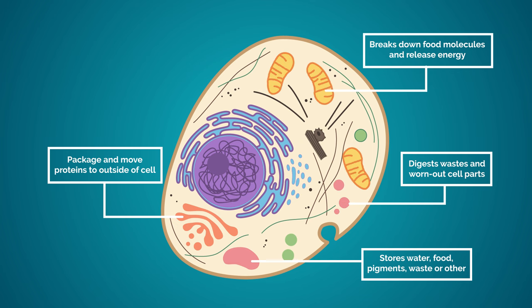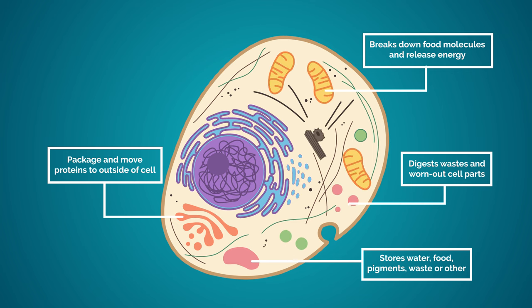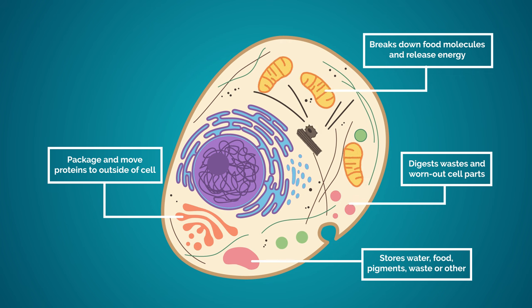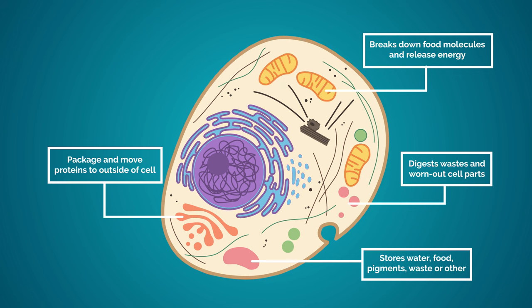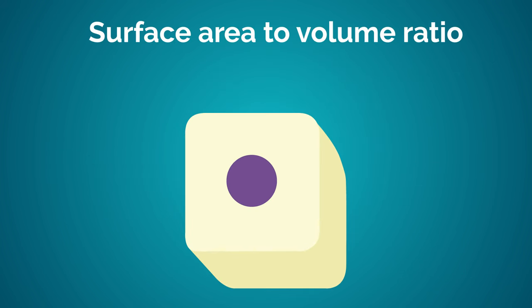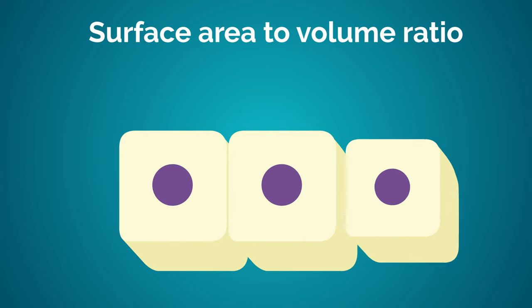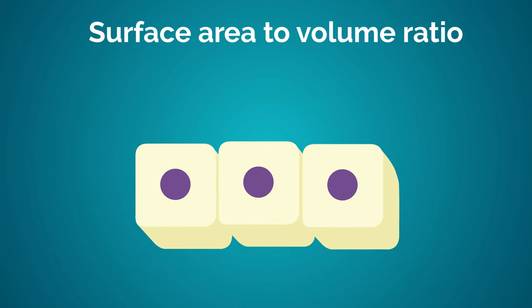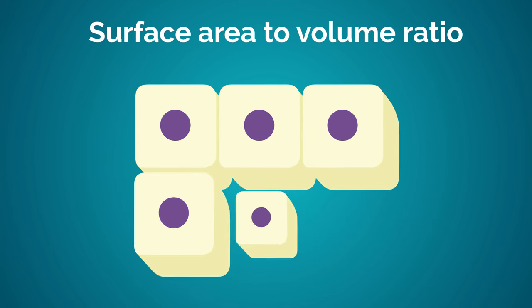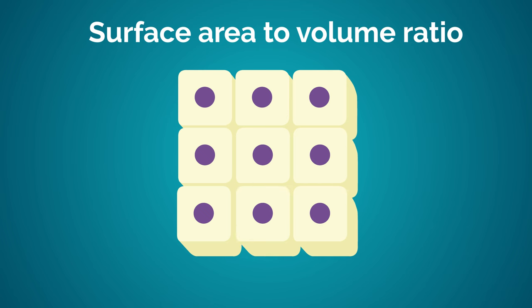But bigger doesn't necessarily mean better. The small size and simplicity is an advantage to prokaryotes — it suits their lifestyle. Being small means they have a large surface area to volume ratio and so they can easily meet their nutritional needs to grow quickly and multiply rapidly.